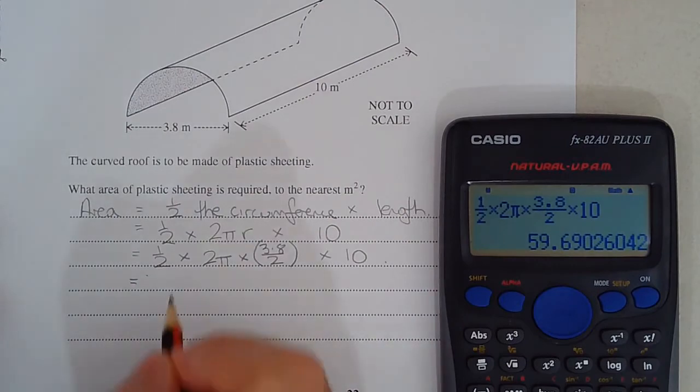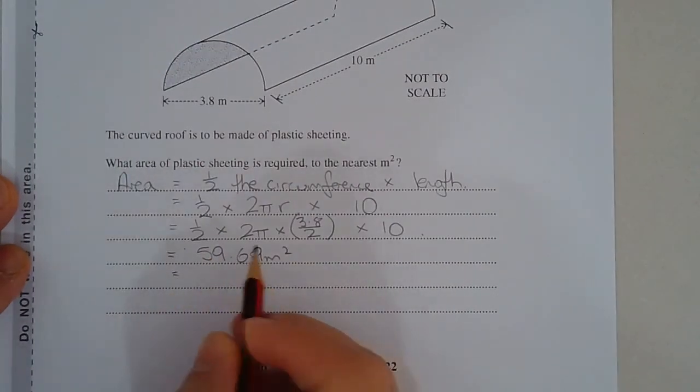And we get 59.69 square meters and then round it to the nearest square meter. That's going to be 60 square meters.